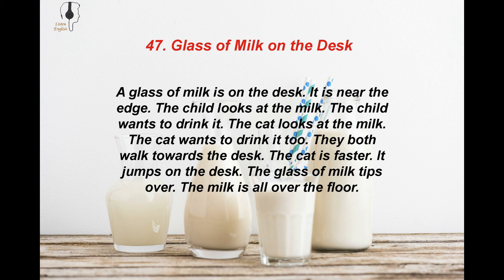A glass of milk is on the desk. It is near the edge. The child looks at the milk. The child wants to drink it. The cat looks at the milk. The cat wants to drink it too. They both walk towards the desk. The cat is faster. It jumps on the desk. The glass of milk tips over. The milk is all over the floor.